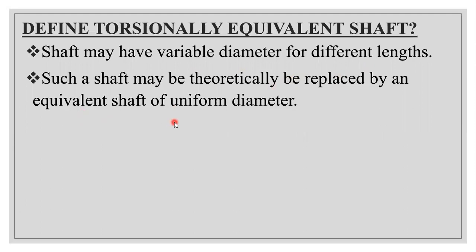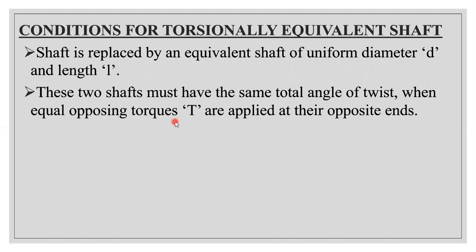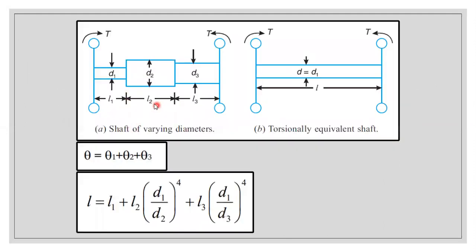For that we will be following two conditions. The first condition is converting or replacing the varying shaft diameter with the equivalent shaft of uniform diameter d and length l. The second condition involves the angle of twist: if shaft one has angle of twist theta one, shaft two has theta two, and shaft three has theta three, then the sum of all these angles of twist should equal the angle of twist of the equivalent shaft.